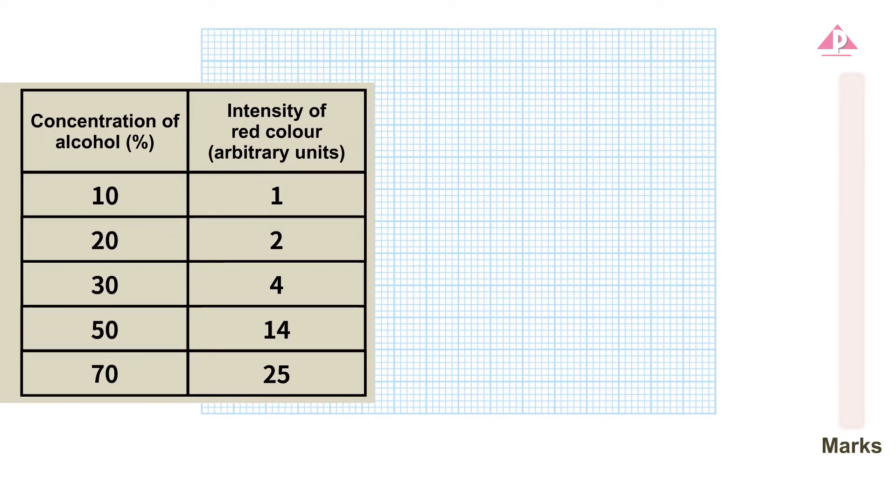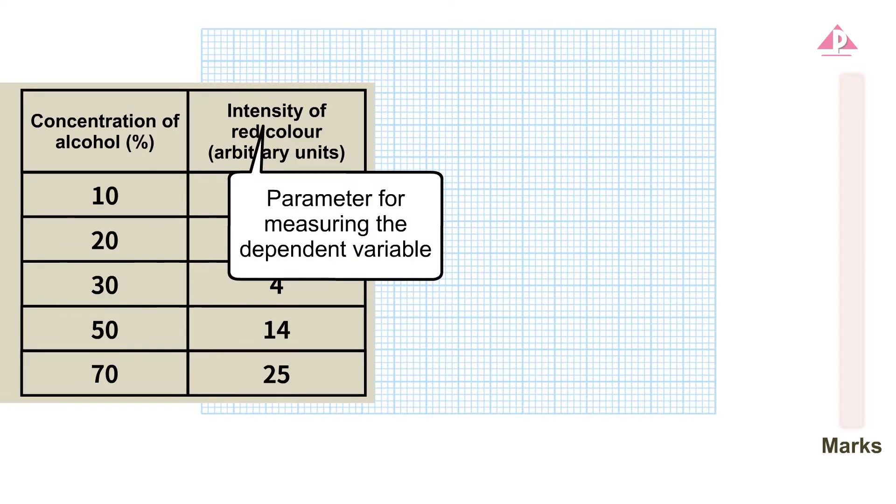A more intense red color in the alcohol indicates that more red pigment has moved across the cell membrane, meaning the cell membrane is more permeable. Therefore, the intensity of the red color is a parameter for measuring the dependent variable.